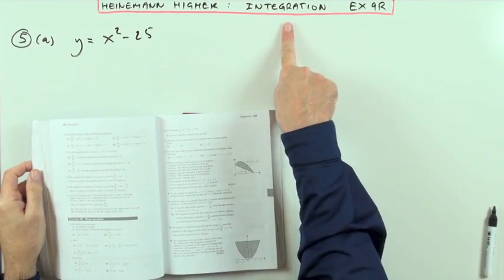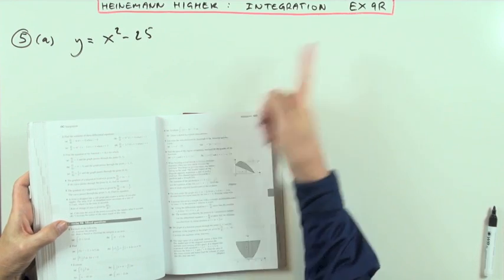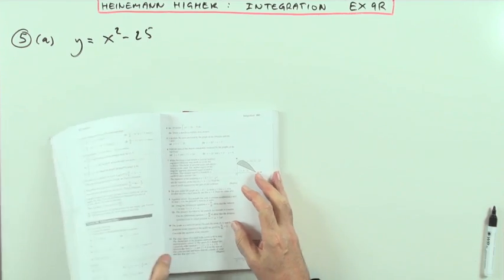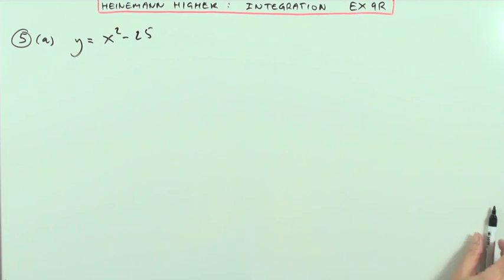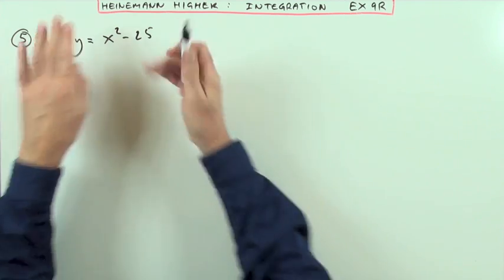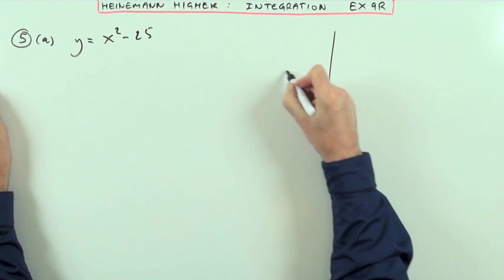Heinemann Higher, chapter 9 on integration, the mixed questions 9R at the end, number 5. Calculate the area enclosed between the graph and the x-axis.